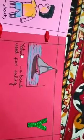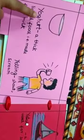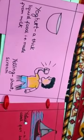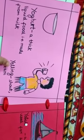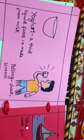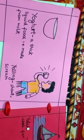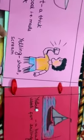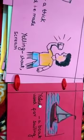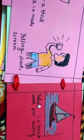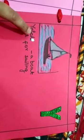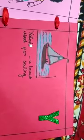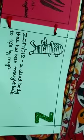The next alphabet is Y. The first word is yogurt. Yogurt means a thick liquid food that is made from milk. It is called dahi. The second is yelling, that is to shout or scream very loudly. And the third one is yacht, that is a boat used for sailing.